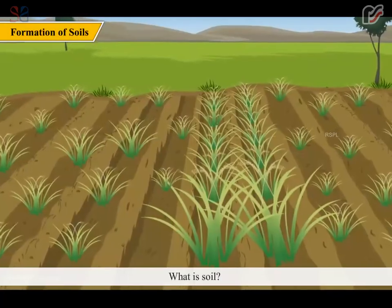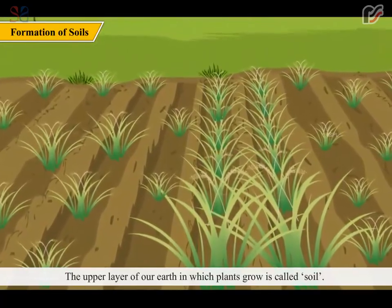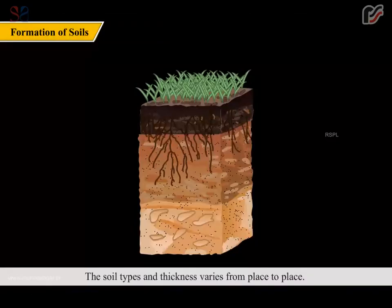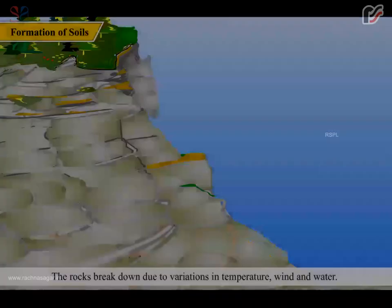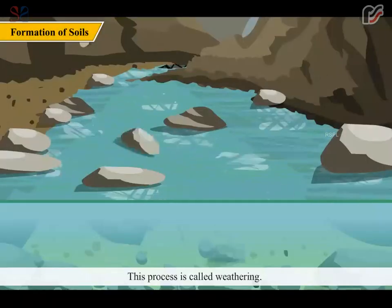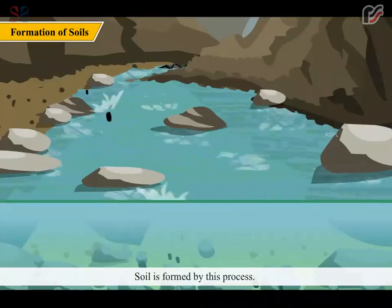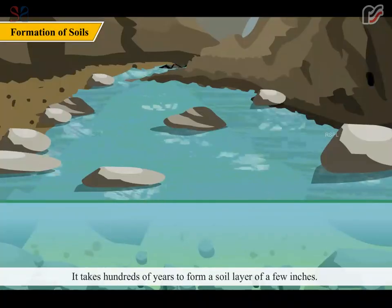What is soil? The upper layer of our earth in which plants grow is called soil. The soil types and thickness varies from place to place. The rocks break down due to variations in temperature, wind and water. This process is called weathering. Soil is formed by this process. It takes hundreds of years to form a soil layer of a few inches.